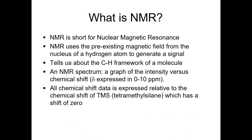NMR stands for nuclear magnetic resonance. What NMR uses is the magnetic field that already exists around the nucleus of a proton. A hydrogen nucleus has its own magnetic field, and that's what NMR uses to generate a signal. NMR tells us about the carbon-hydrogen framework of a molecule — in other words, how the carbons and hydrogens in a molecule are connected.